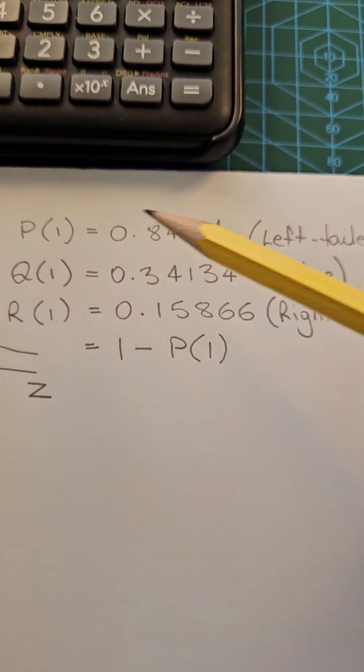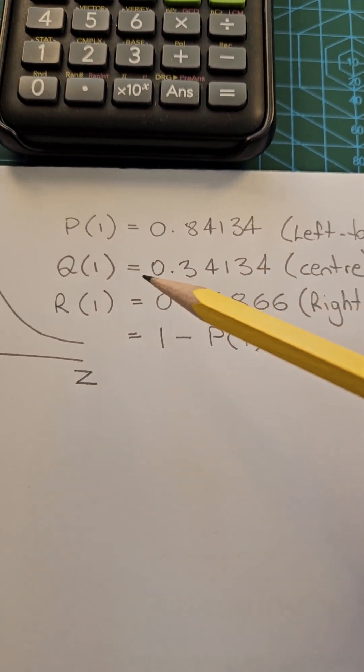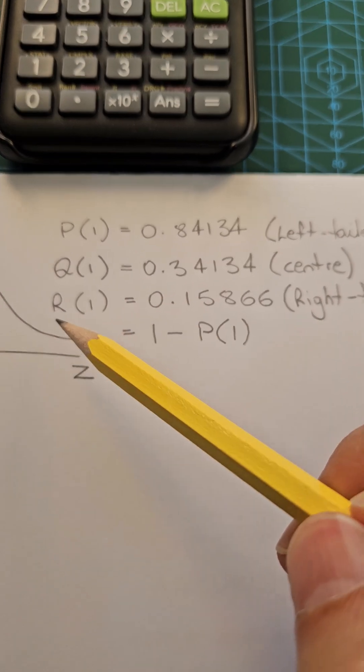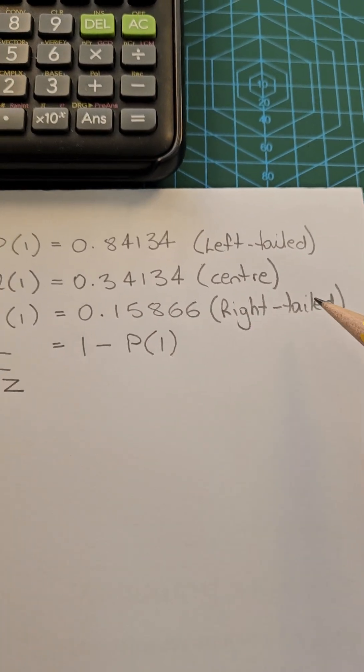Now p is our left tail probabilities, q is our center probabilities, and r are our right tailed probabilities.